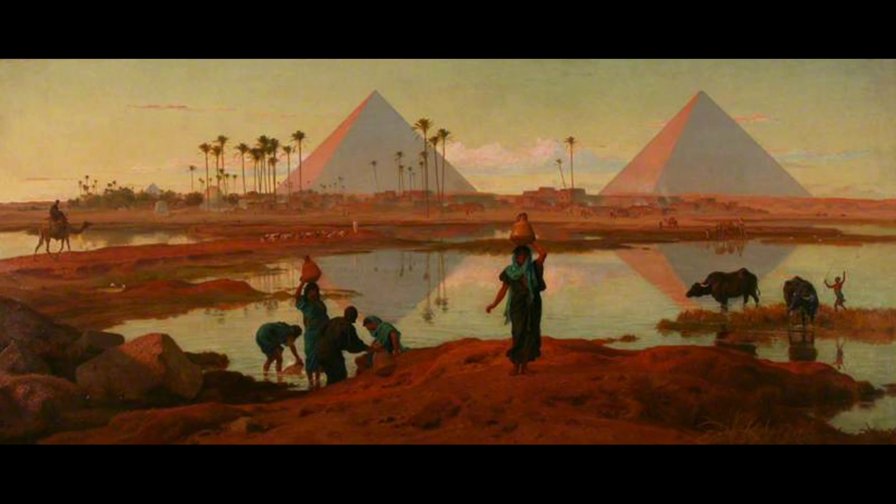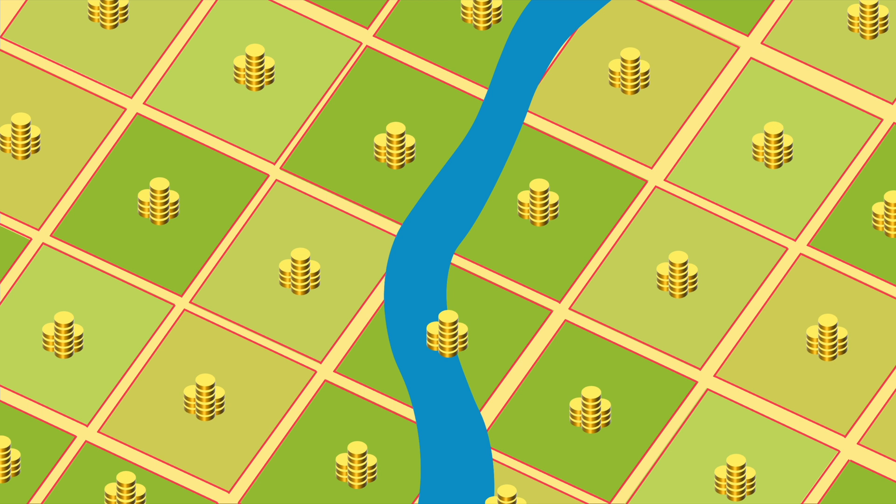In ancient Egypt, agricultural land along the Nile was divided into square plots and distributed evenly among the citizens. Each year, citizens paid the king rent or taxes to use these plots. But there was a problem. The Nile was known to flood annually, damaging in the process portions of some people's land and making them unusable.